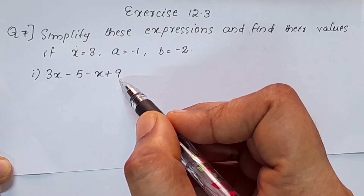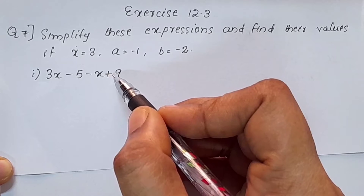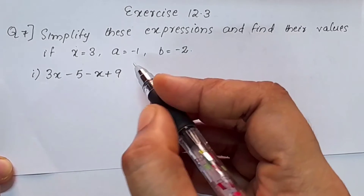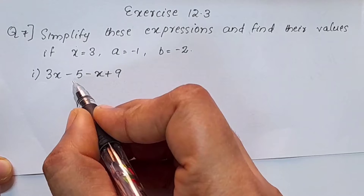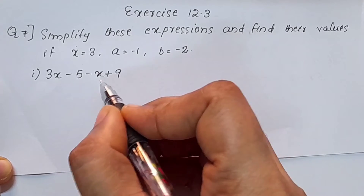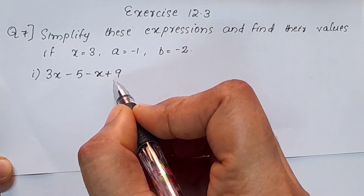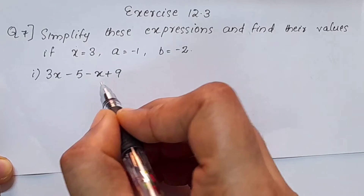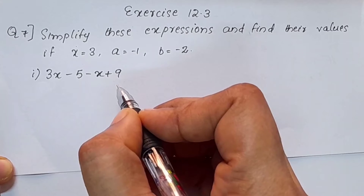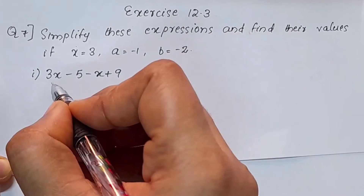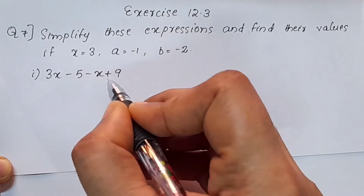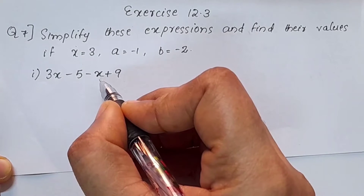We need to simplify this expression. How do we do this? We collect like terms. The first question is 3x minus 5 minus x plus 9. We identify the like terms: 3x and negative x.